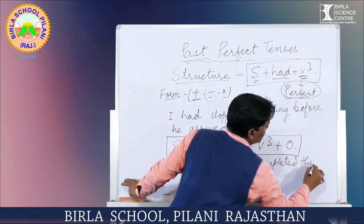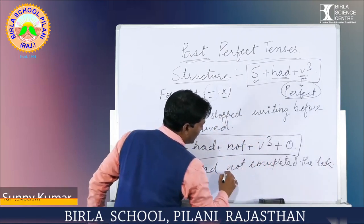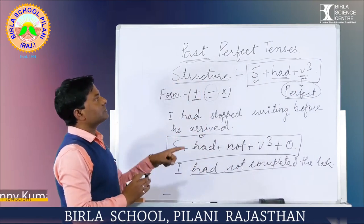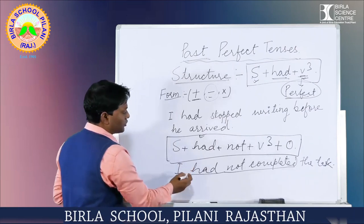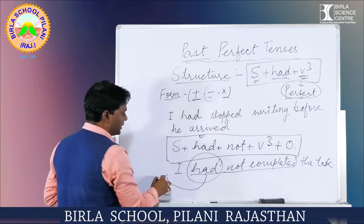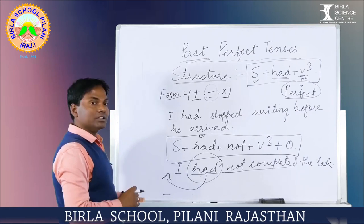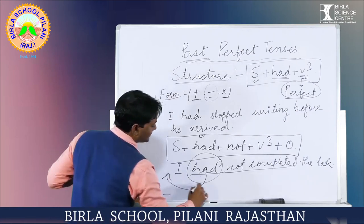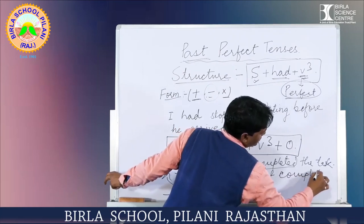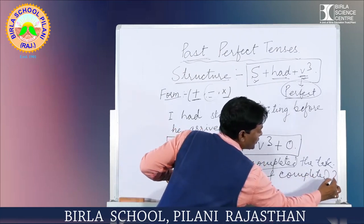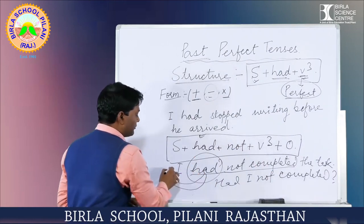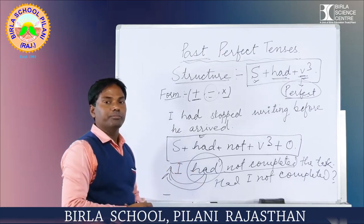'Had not completed' indicates the negative form of the past perfect tense. We can also make its question form. For making a question, we place the helping word at the beginning of the sentence. So the interrogative form will be: 'Had I not completed the task?' Remember, when we use a question sentence, a question mark is added, and the helping verb is written at the beginning of the sentence.